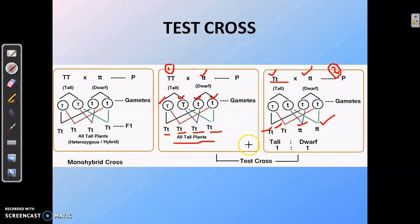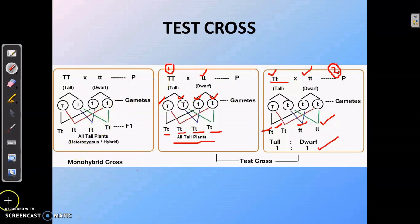Hence, if a tall plant is heterozygous in nature and a test cross is performed, the offspring will have a ratio of tall to dwarf of 1:1. If a tall plant is homozygous in nature and it undergoes a test cross, all offspring will be only tall phenotypically. Thus, a test cross is done to determine the genotype of a dominant character — whether it is homozygous dominant or heterozygous dominant — by looking at its offspring.